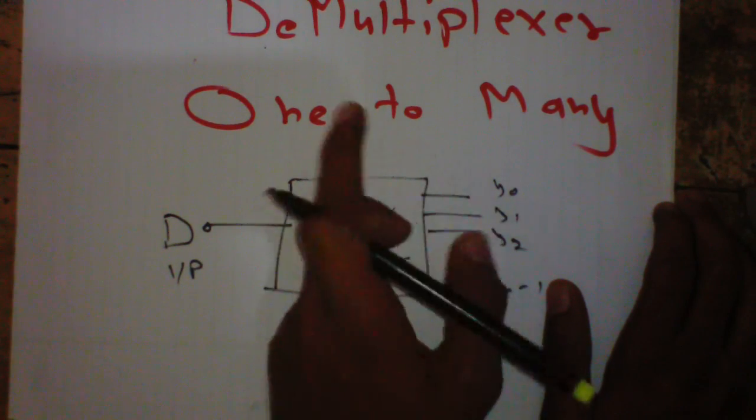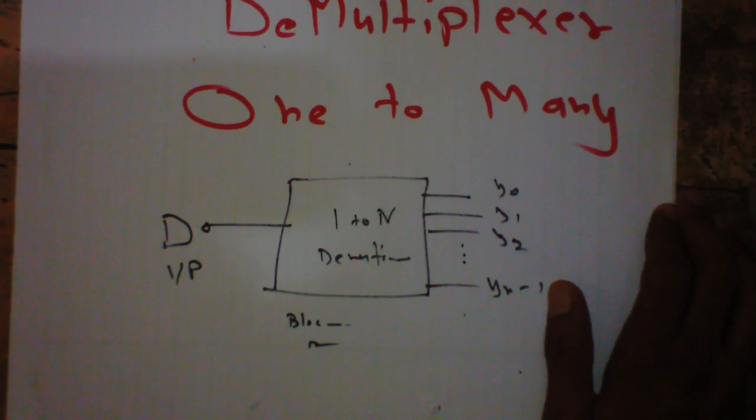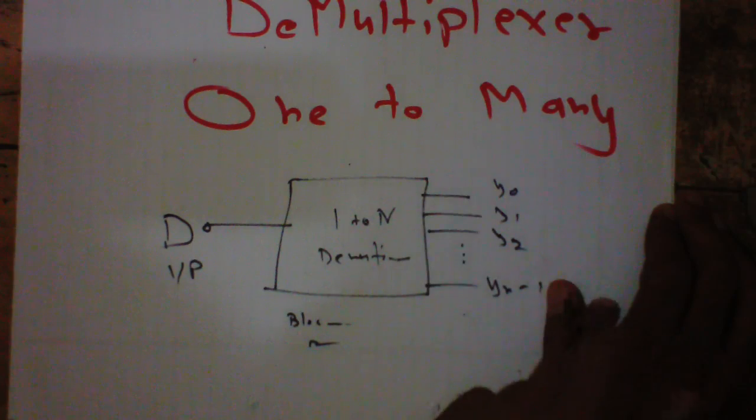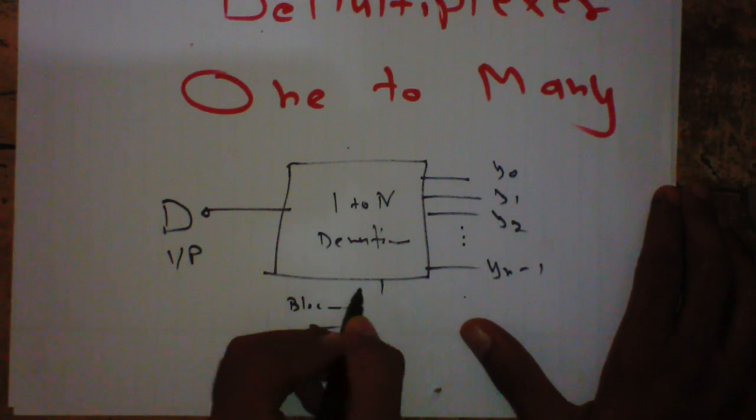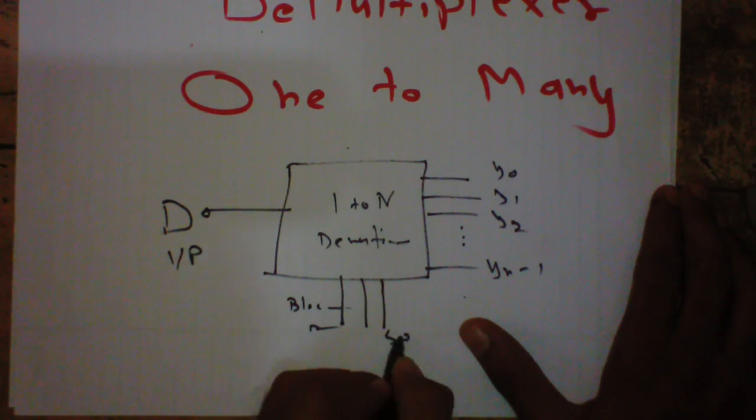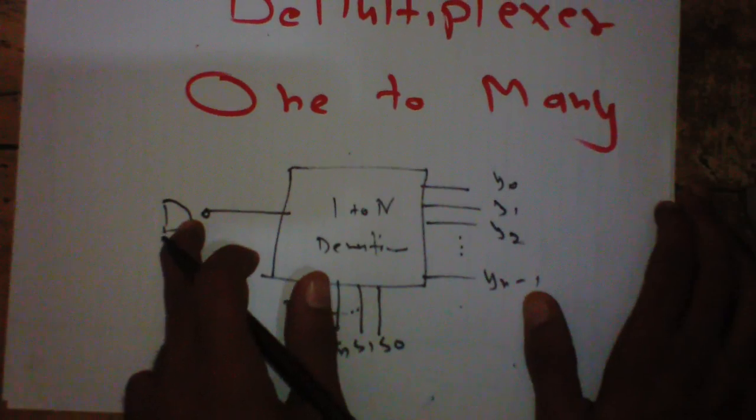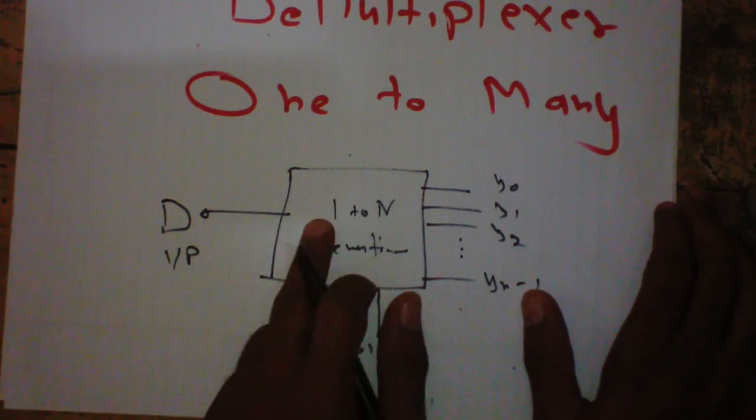On which output should it be sent? It decides with the help of select inputs - select inputs S0, S1, and Sn. With the help of select inputs, it will select on which output the input has to be sent.